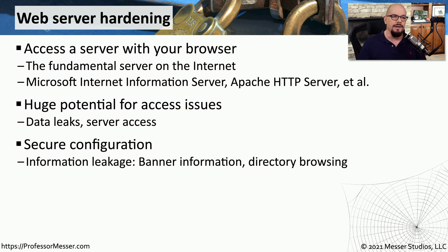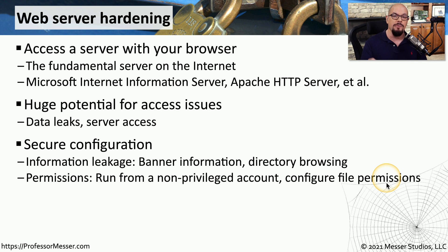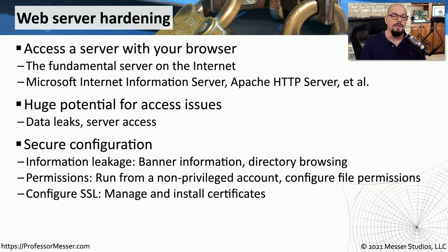A hardening guide for a web server might include information on how to prevent information leakage by adding banner information and disabling any type of directory browsing. It will also provide best practices for understanding how this service should run in the operating system. For example, a web server should run from a non-privileged account, and there should be specific file permissions for the web server software and configurations. If you want to enable encrypted communication to the web server, then you'll need to configure SSL, which usually takes a number of steps to implement and is typically part of any good hardening guide.